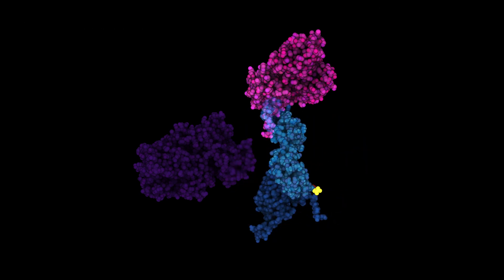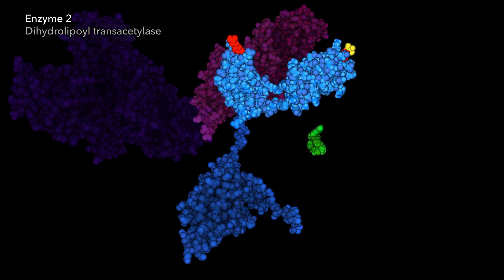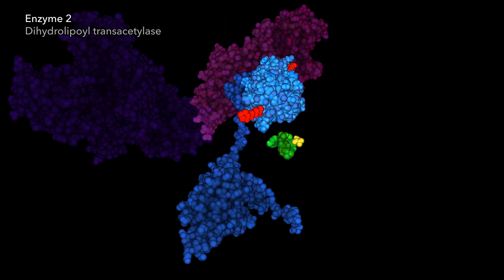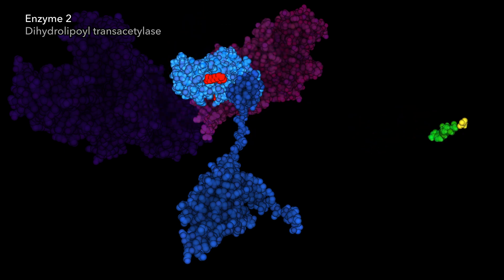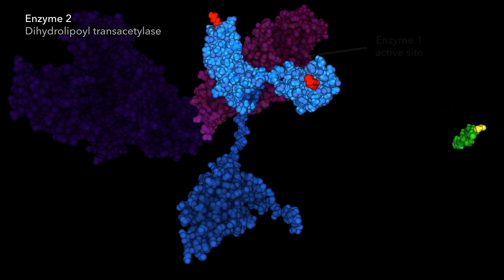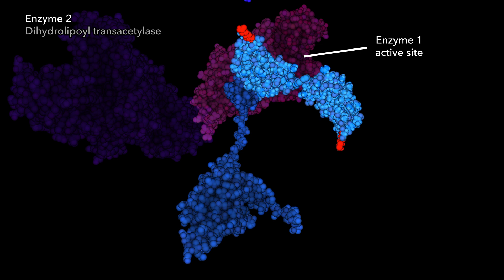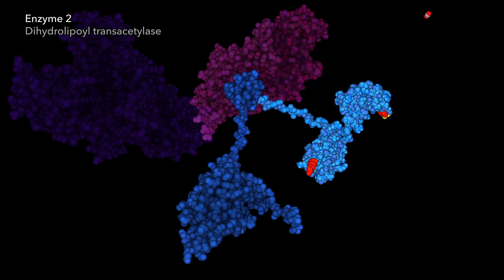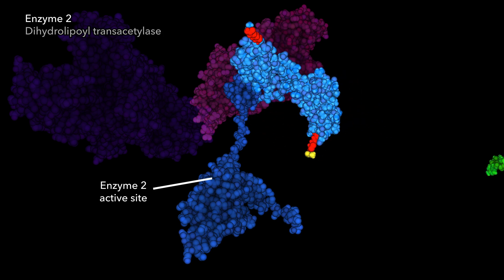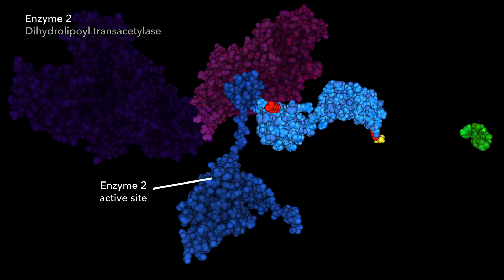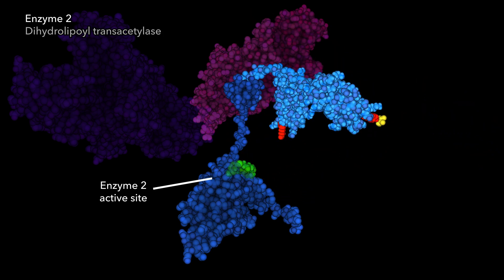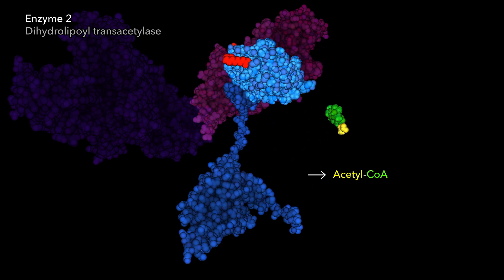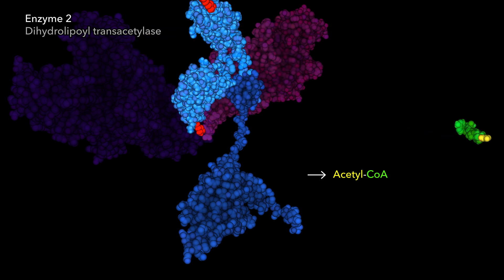The acetyl group is then grabbed by the second enzyme, using flexible arms to efficiently transfer the product between reaction sites. In the active site of the second enzyme, the acetyl group is attached to coenzyme A, generating acetyl-CoA, fuel for the citric acid cycle.